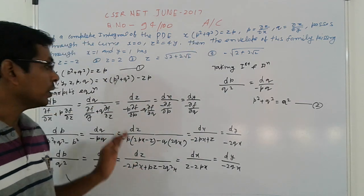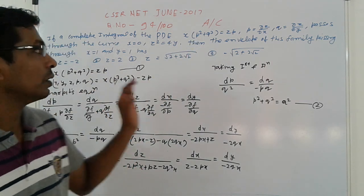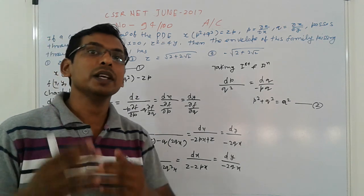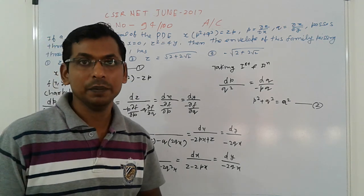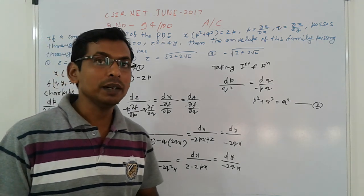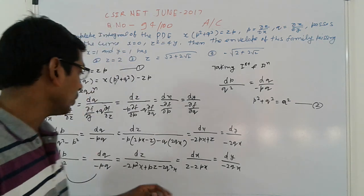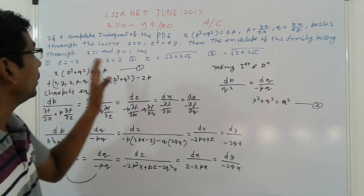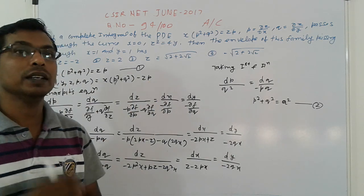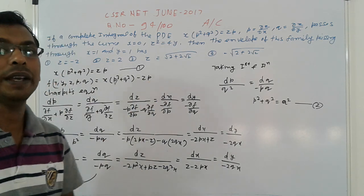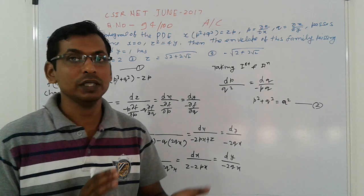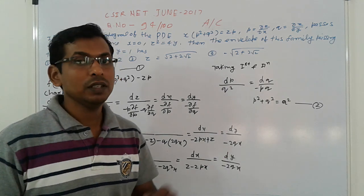First, find out the complete integral. Complete integral means you can eliminate p and q in the form of a and b. Apply the standard process and calculations.